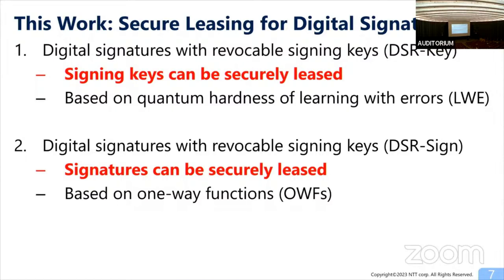Our second construction is called digital signatures with revocable signatures, or DSR sign for short. In DSR sign, what can be securely leased are the signatures themselves instead of signing keys. We construct it based on one-way functions, which is an even more standard assumption in cryptography.